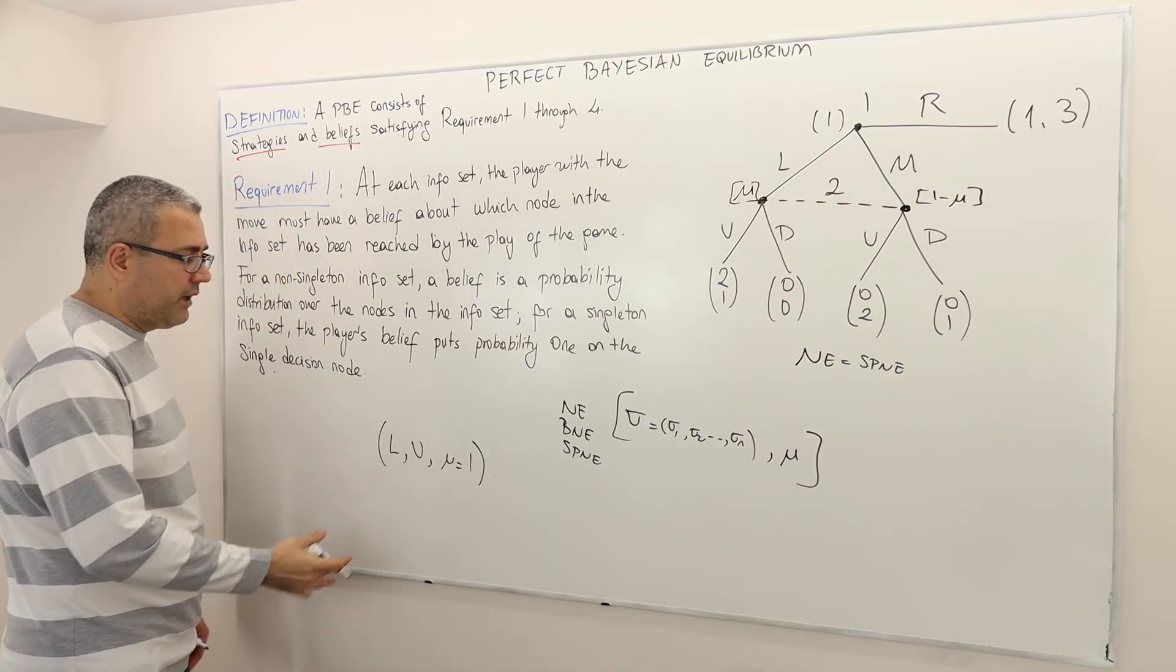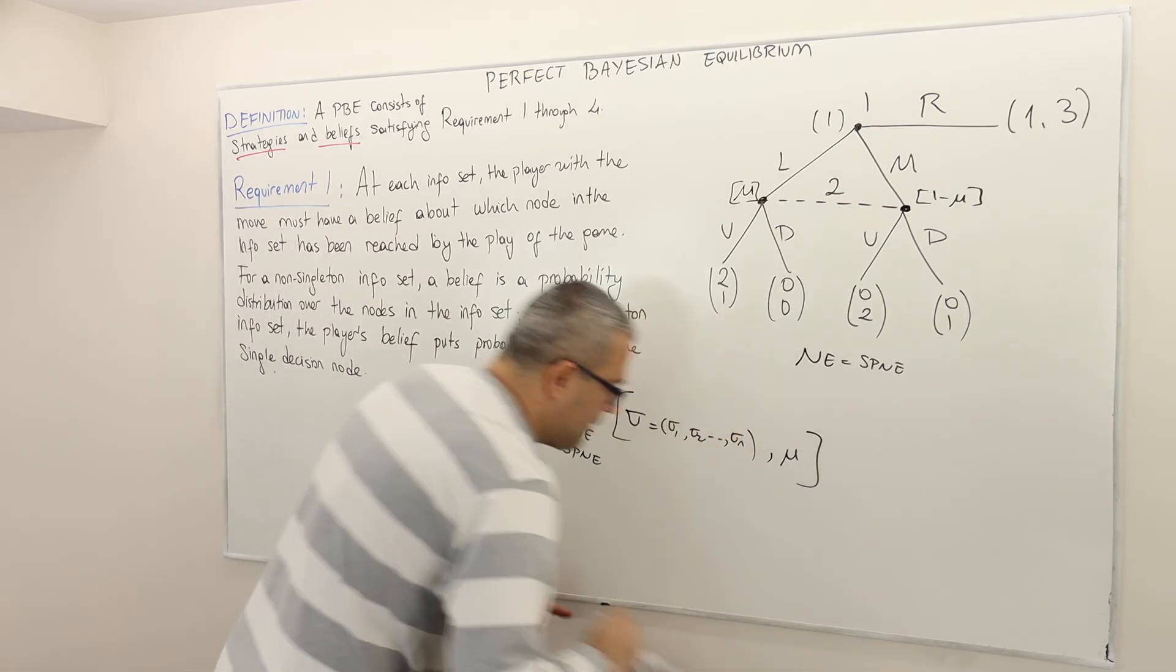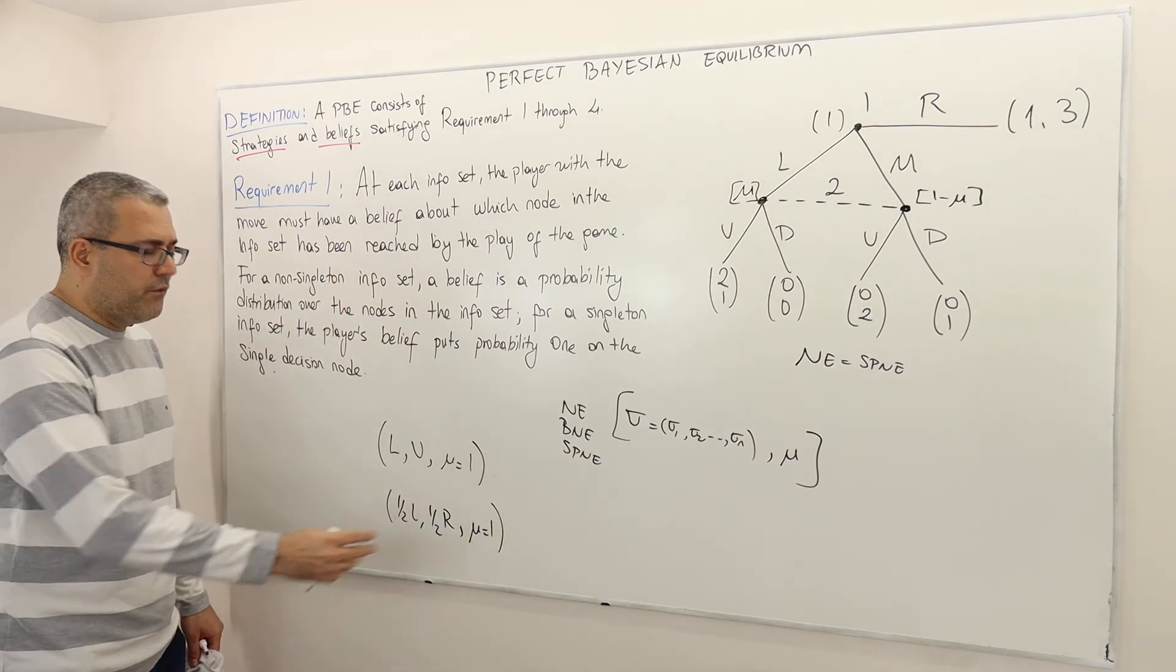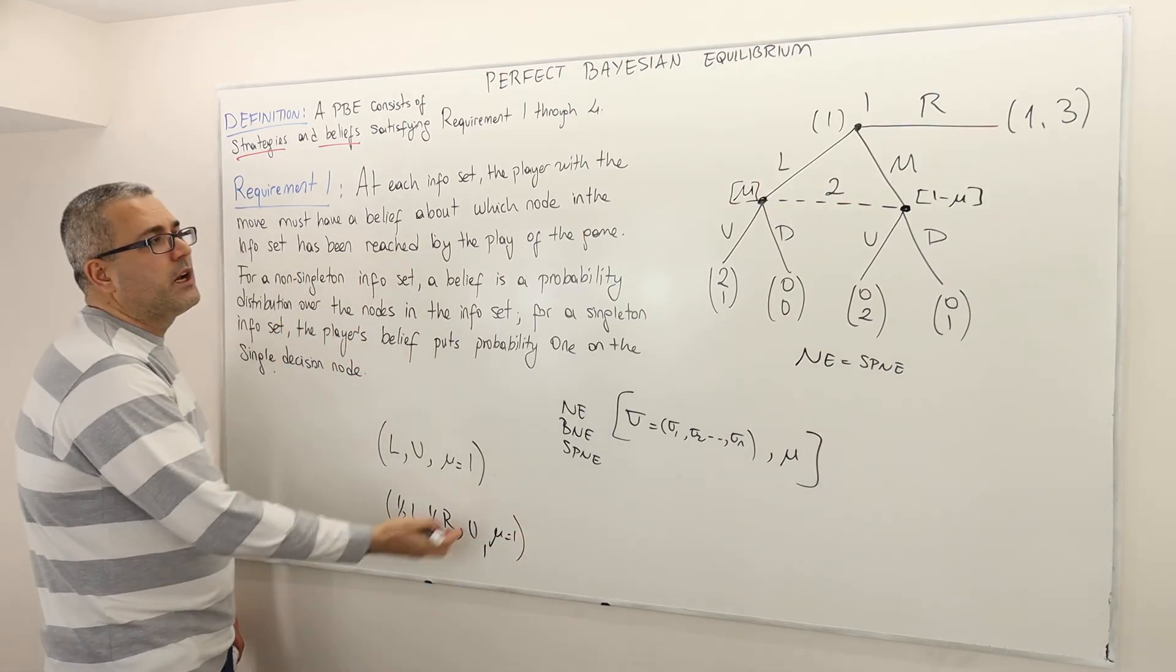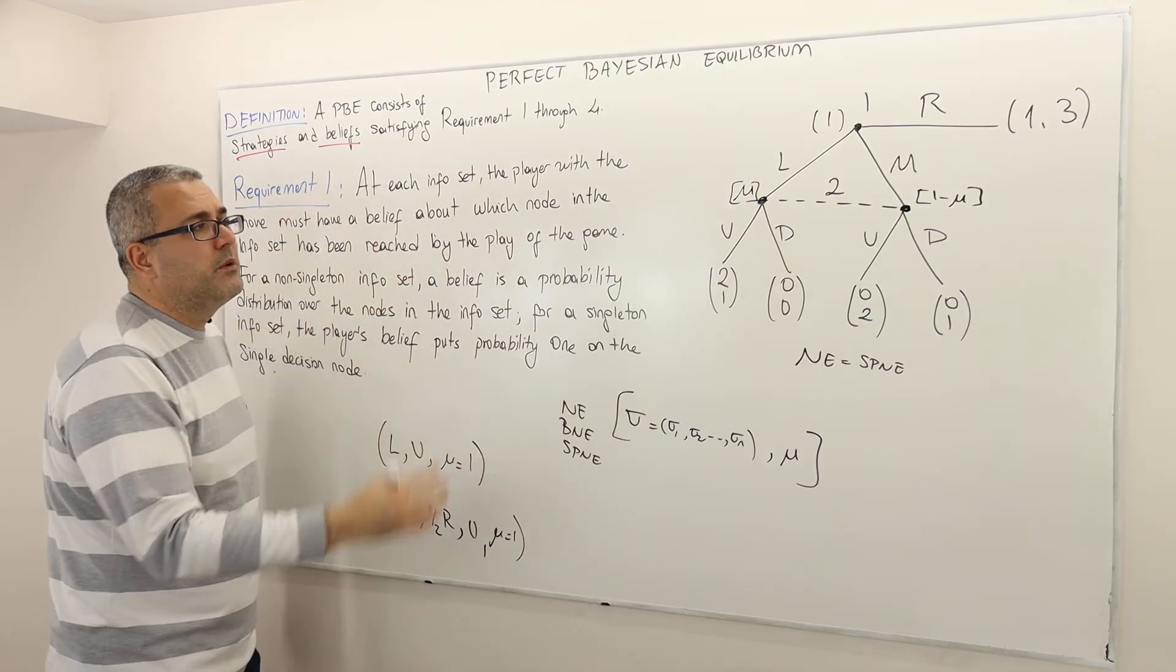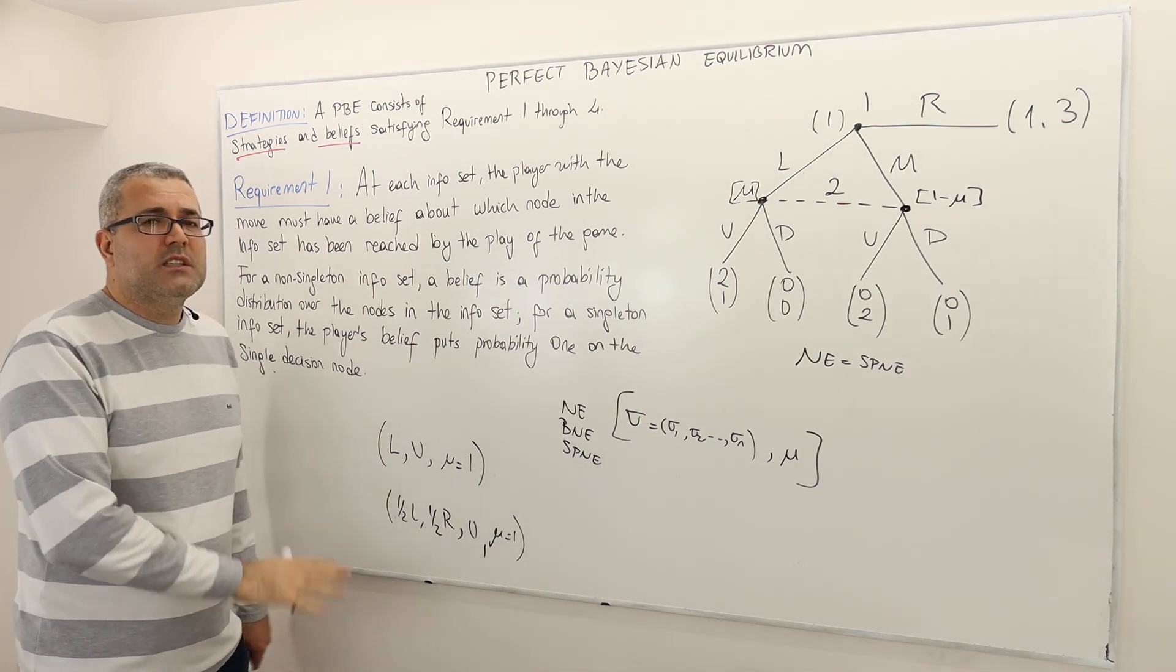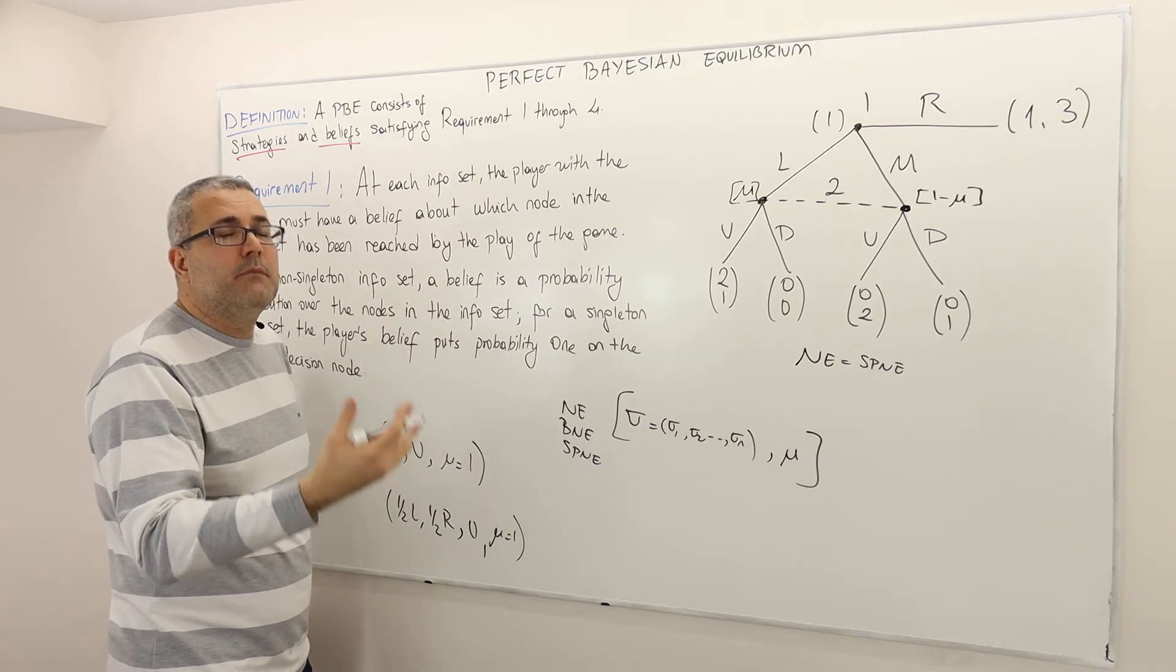However, this is also admissible. The next one is also an admissible strategy profile and belief system. So, a mixed strategy: 1 half L, 1 half R, and mu equals 1. This is also an admissible strategy profile and belief system. It says player 1 is going to randomize between left and right with equal probabilities, and player 2 is going to play U, and then player 2 believes that he is going to be in this decision. By the way, I'm not asking if these strategies are optimal. Not yet. Okay? We're not there yet. Here, I'm just saying that a belief system and the strategy profile is going to give us what players would play and what players may believe. Alright?